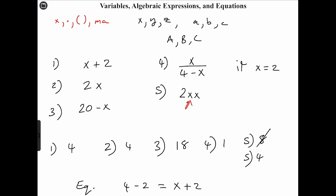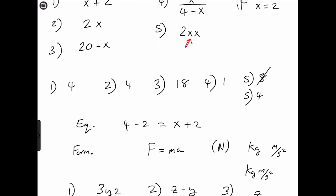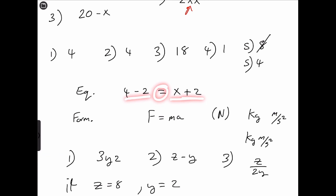For algebraic expressions, an algebraic expression consists of numbers, variables, and operation symbols. An equation is a mathematical statement that consists of two algebraic expressions and an equal sign. A formula is a special type of equation that describes the relationship between two or more quantities. That's it for today's video — see you in the next one. Bye!